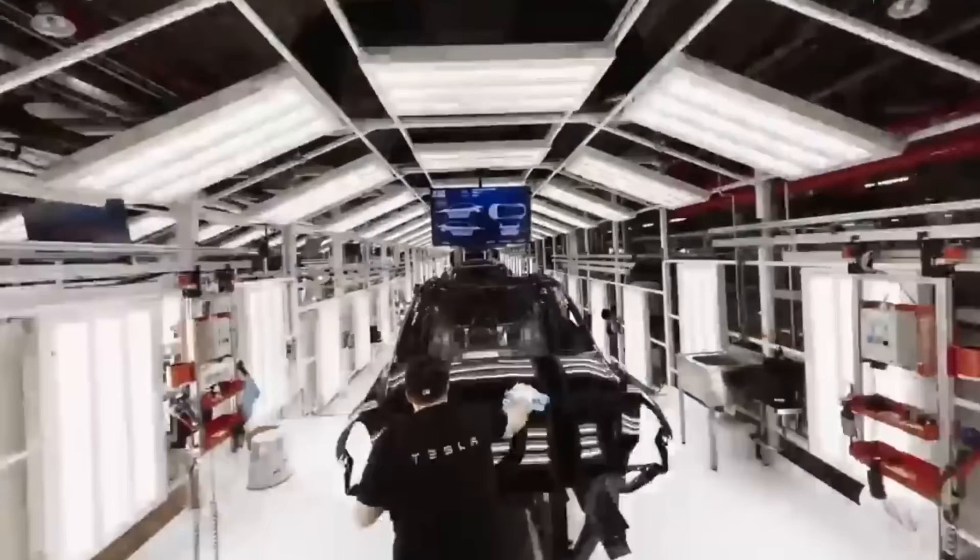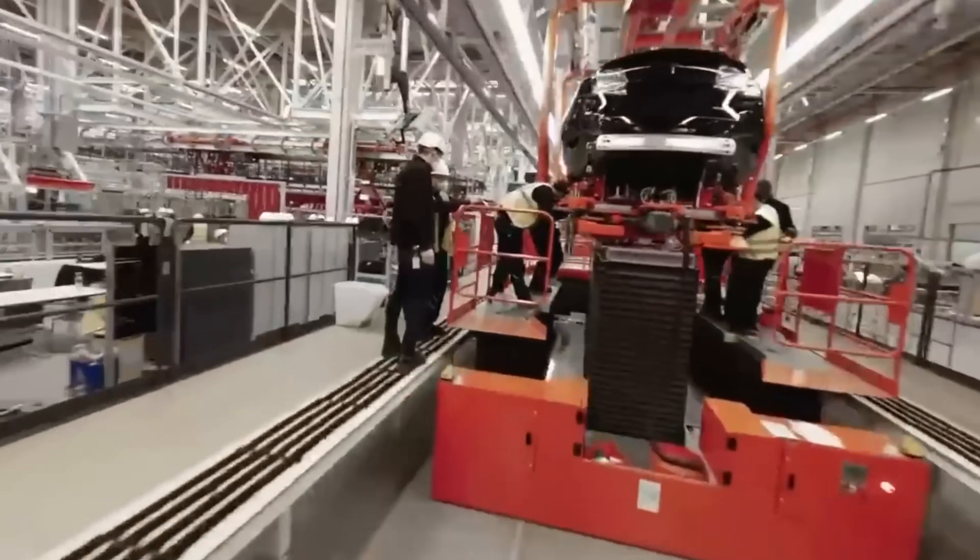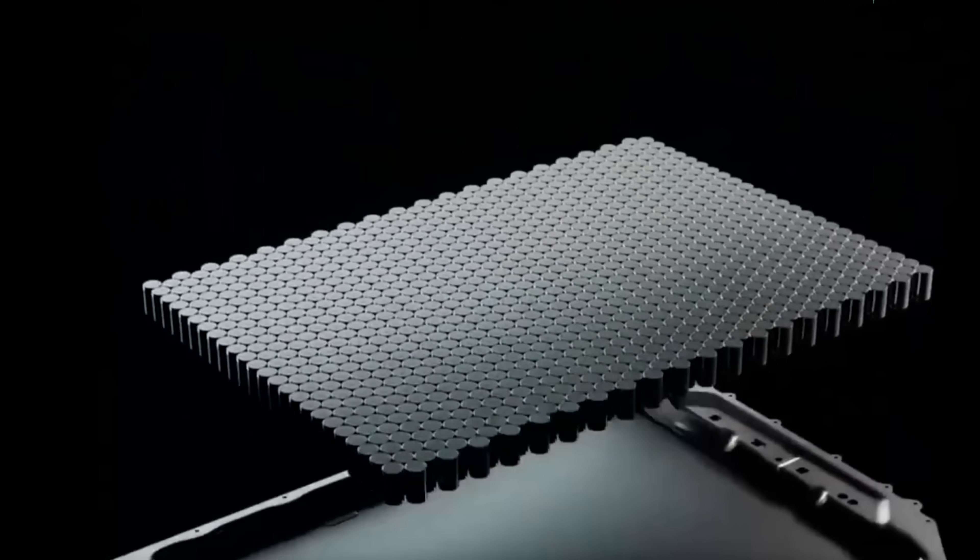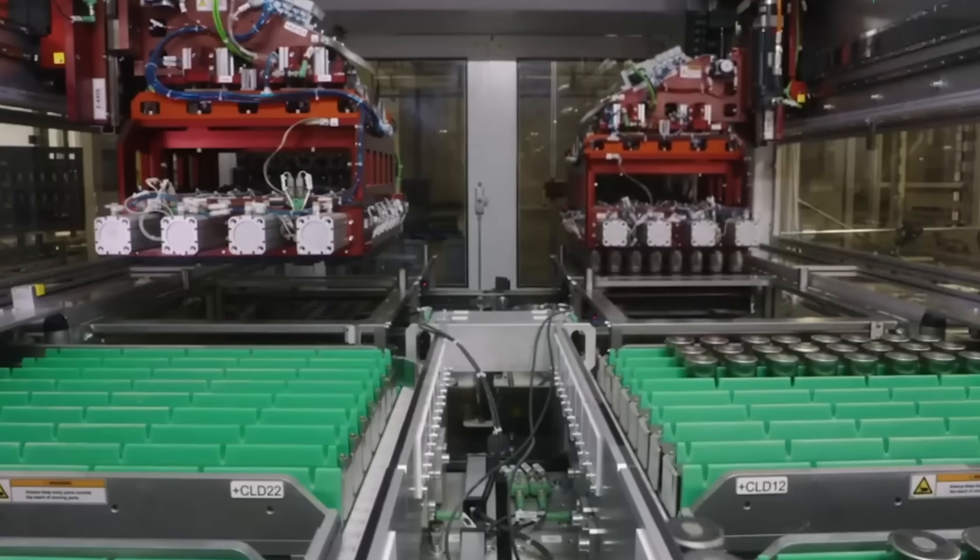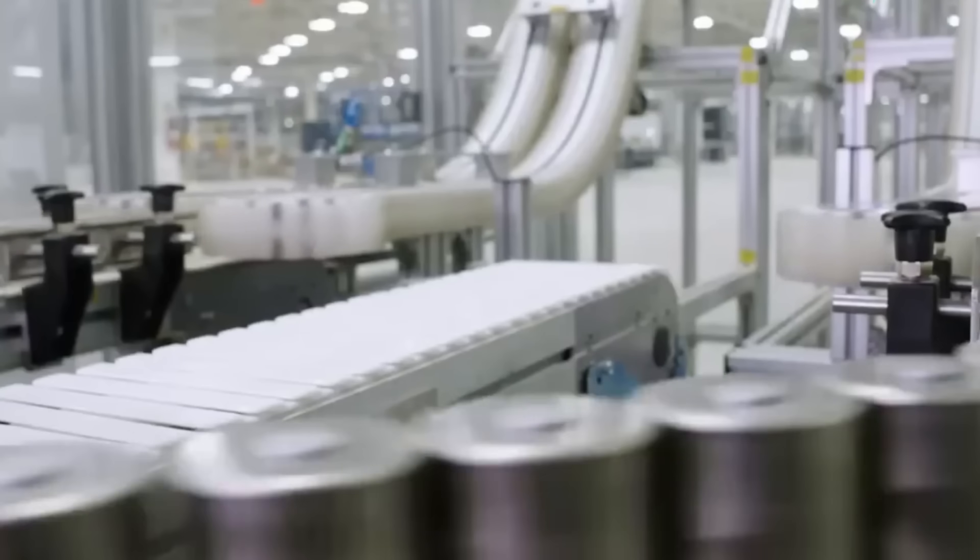Tesla changed the way electric cars were built a few years back when it introduced the structural battery pack. Instead of mounting a battery underneath the car like a big box, they made the pack part of the structure itself. So the battery was also the floor and even part of the frame. It reduced parts and weight and also some cost and made the car stiffer, so there were a lot of benefits to it.